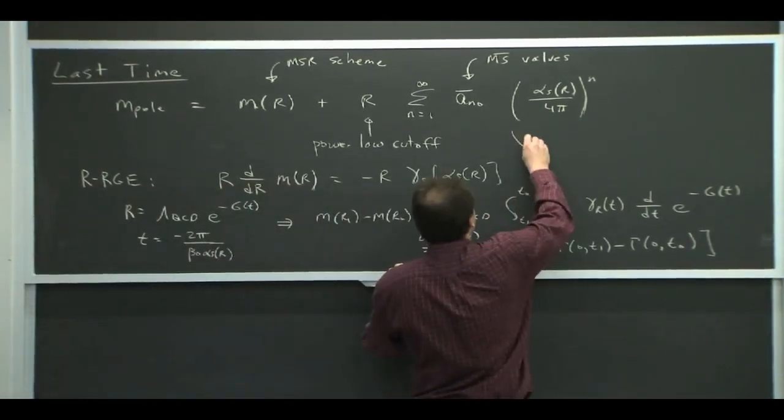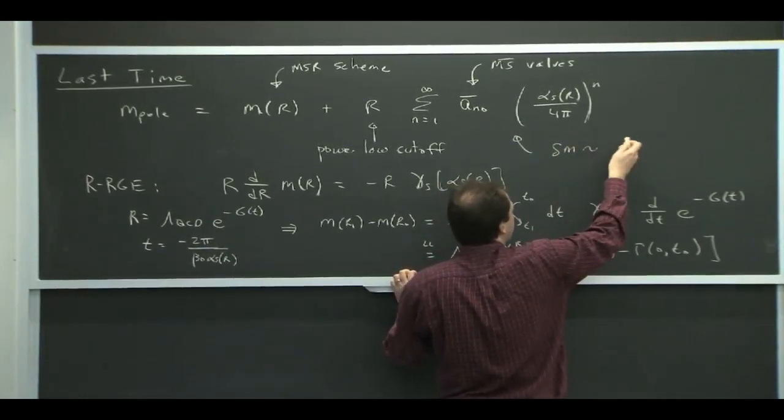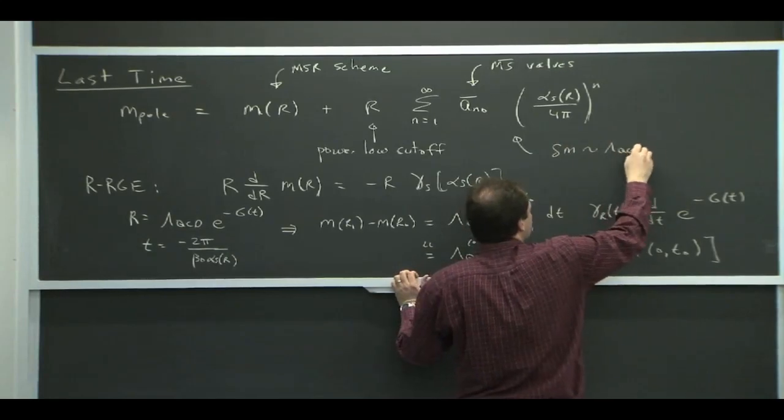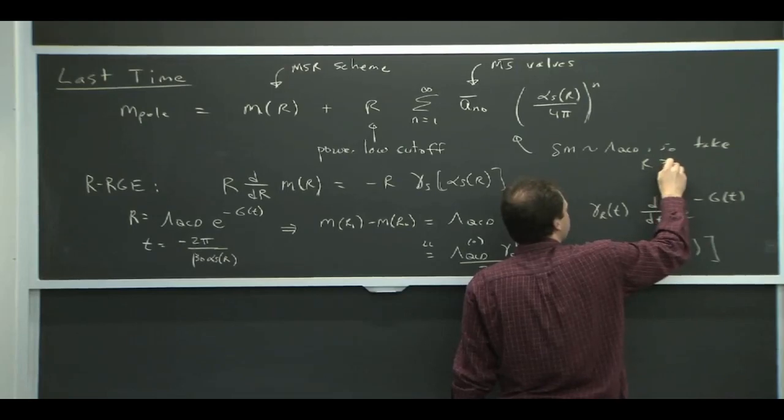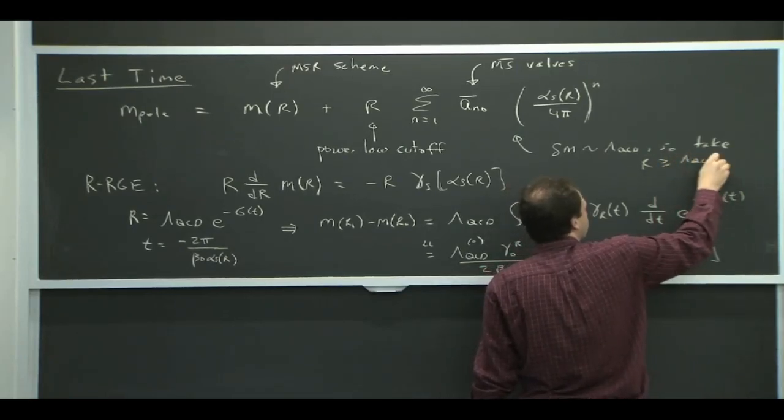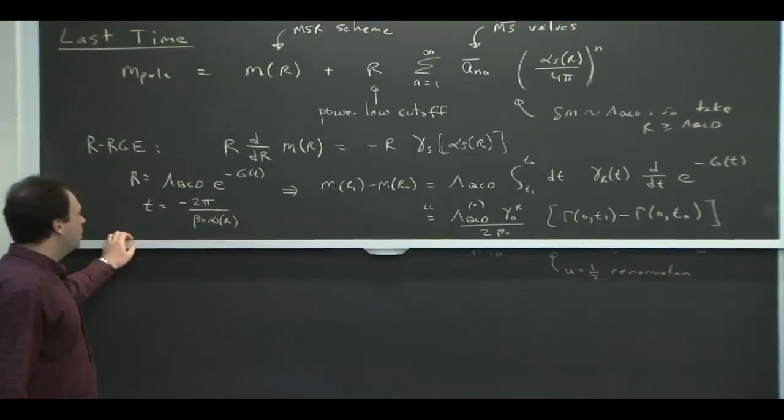This is like a mass scheme that has an adjustable cutoff which we can take to be at whatever scale we want. In particular, in HQET, you'd want to take that R to be something like a GeV type scale because that wouldn't spoil your power counting. Recall in HQET that this delta M should be, by power counting, of order lambda QCD.